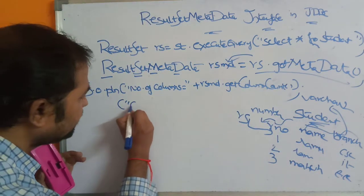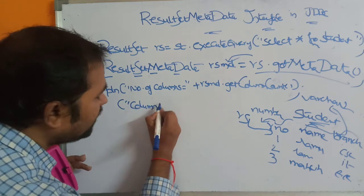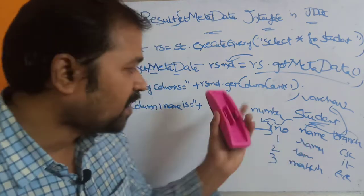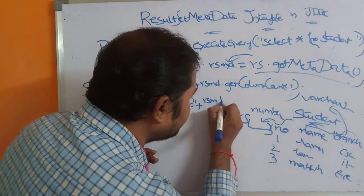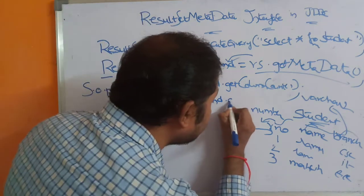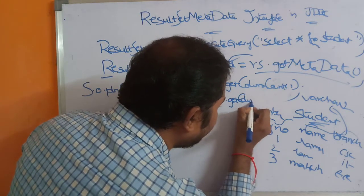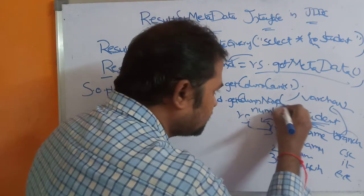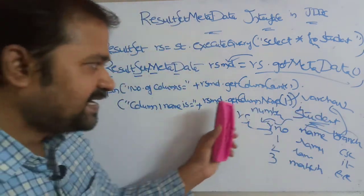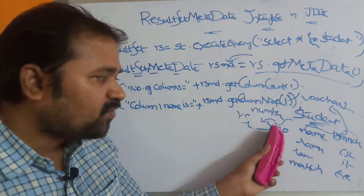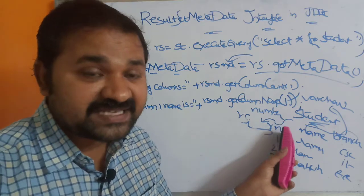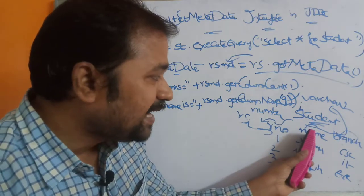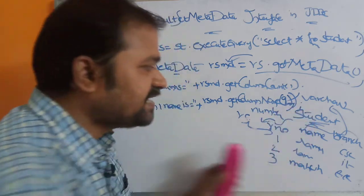The next method is getColumnName(). To get the first column name, we write: RSMD.getColumnName(1) — here C and N are uppercase letters. This returns 'role number'. If we supply 2 as the argument, we get the second column name, which is 'name'. If we supply 3, we get 'branch' as the output.